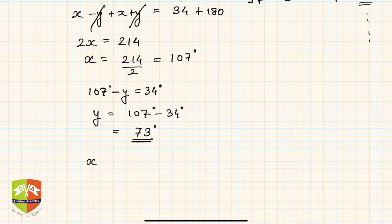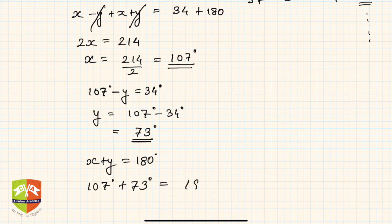Have we got the right answer? We can check. The other equation was x plus y equals 180 degrees. Let's check whether it is satisfying or not. So 107 degrees plus 73 degrees - add them up, you will get 180 degrees. So that means our result is correct. X is 107 and y is 73.